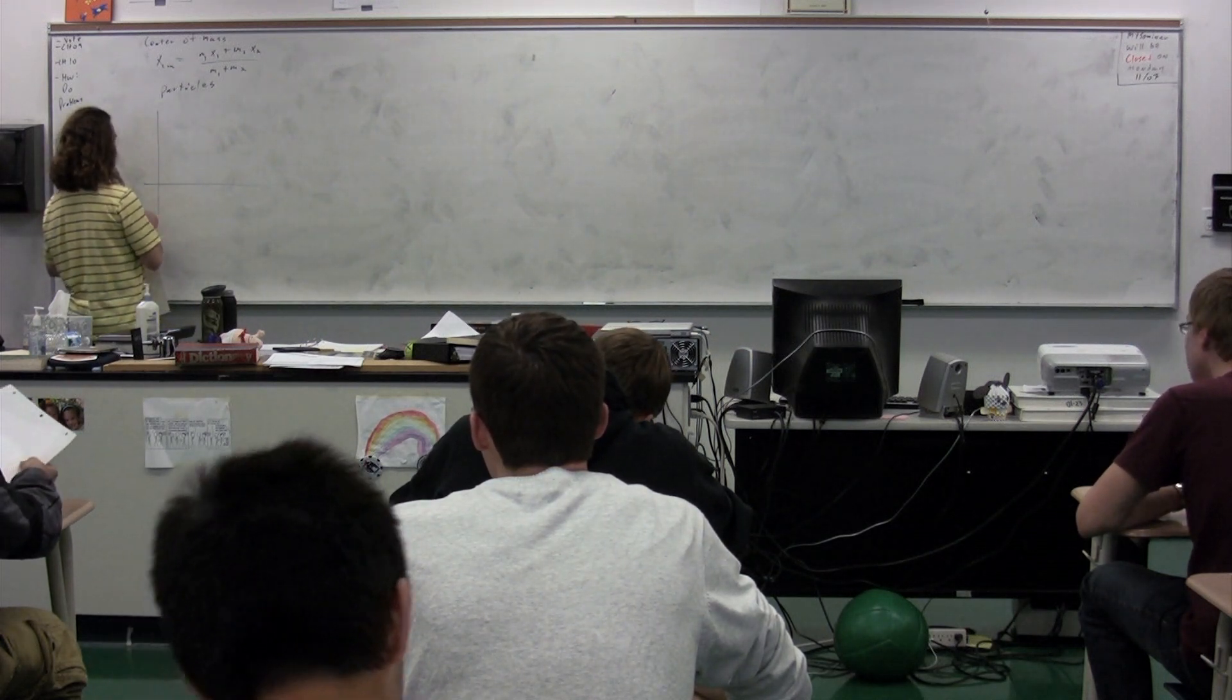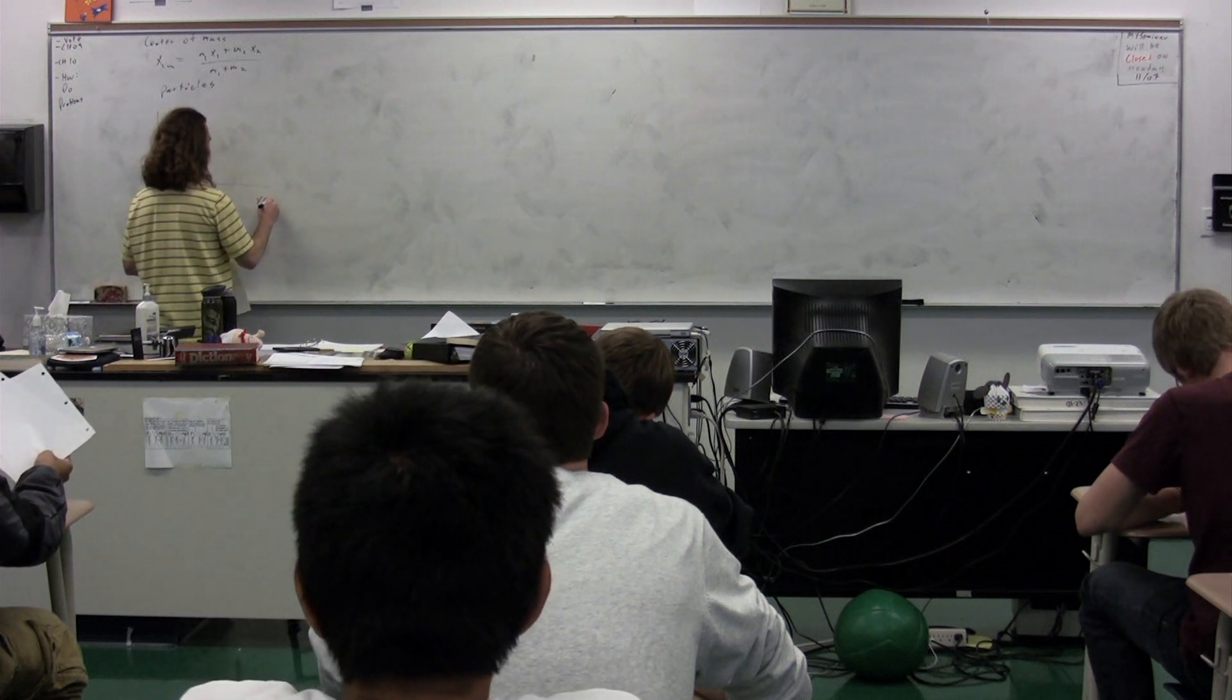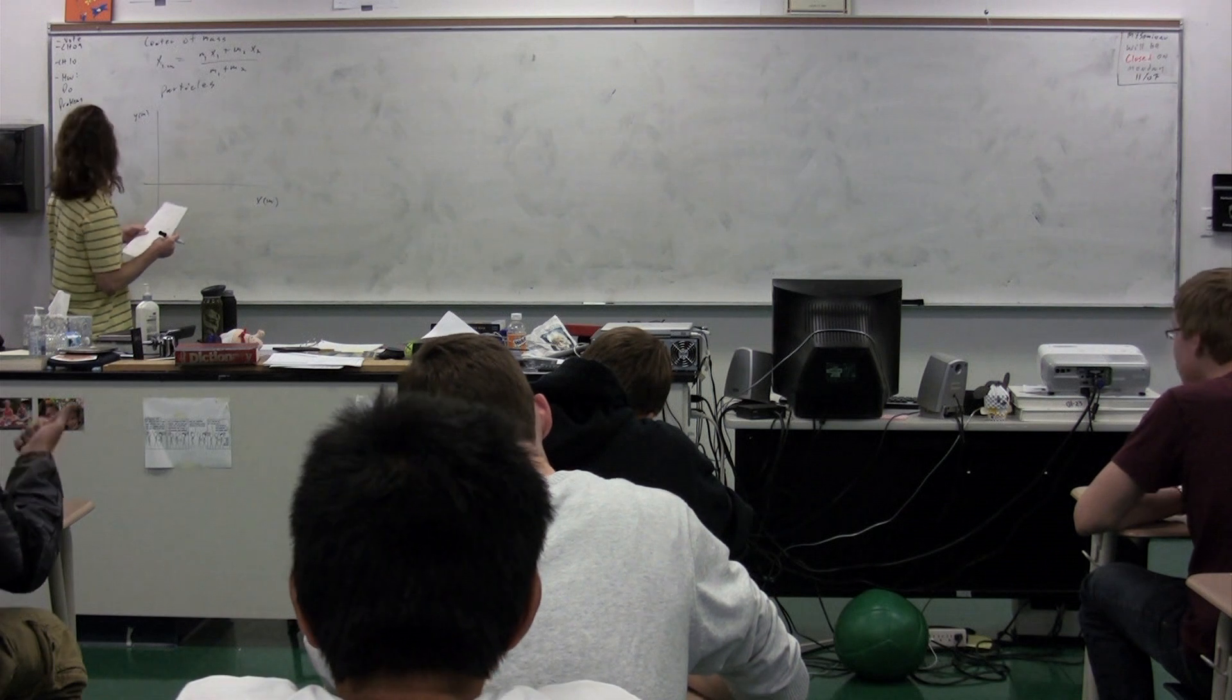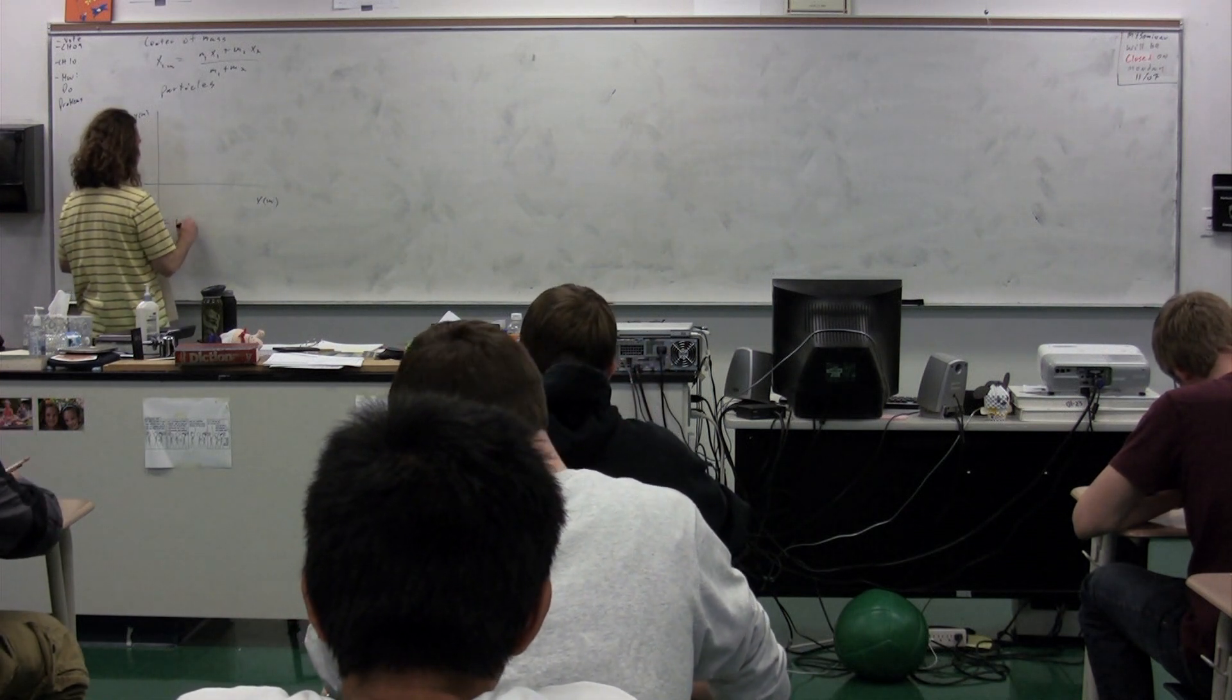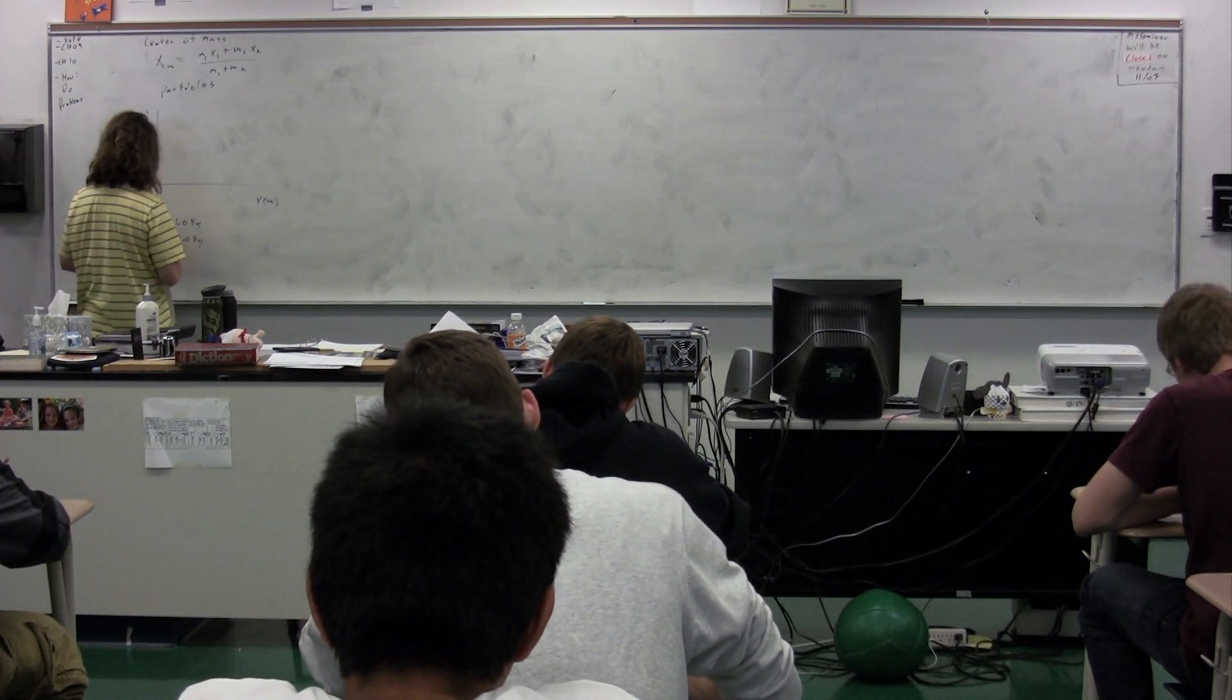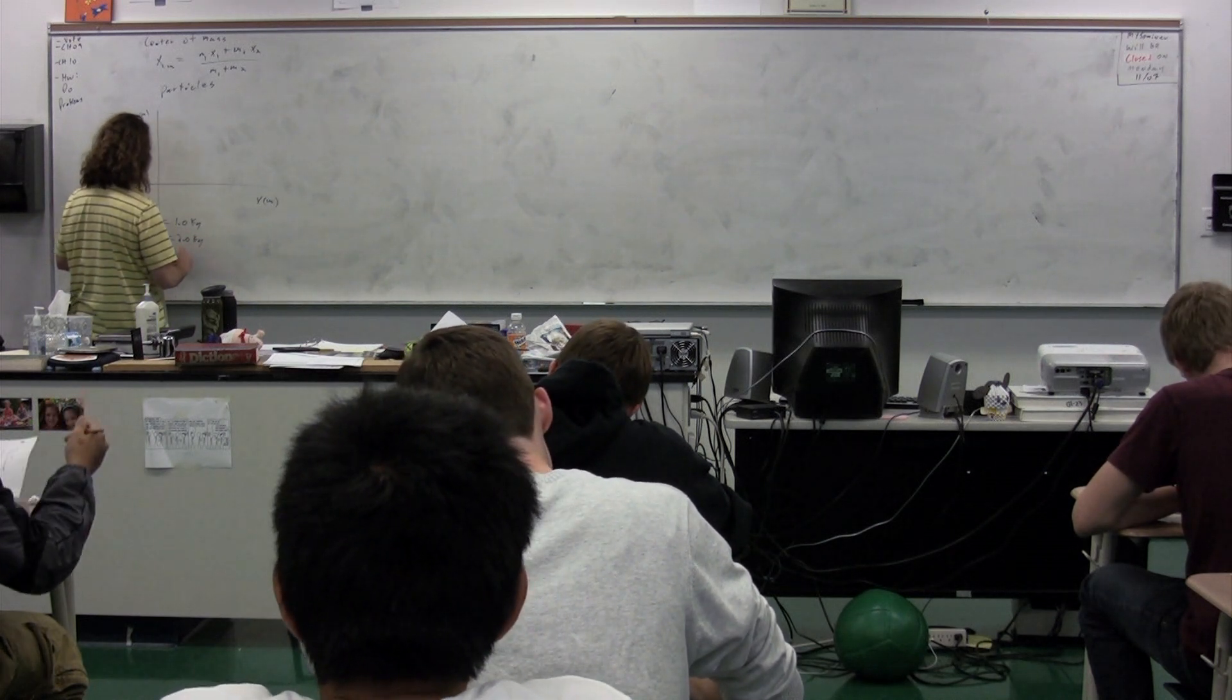We have the x and y positions. We have x in meters, y in meters. We'll take three particles. The mass of the first particle will be 1.0 kilograms. The mass of the second particle will be 2.0 kilograms, and hopefully you can figure out that the mass of the third particle will be 3.0 kilograms.